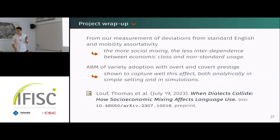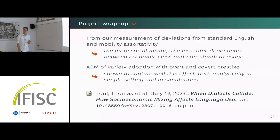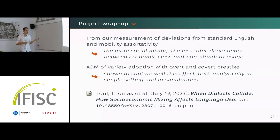To wrap up: we measured how much people deviate from standard language in England and Wales, and relating it to mobility assortativity we found that the more social mixing, the less interdependence between non-standard language use and economic class. We came up with an agent-based model of variety adoption which captured this effect well, both analytically and in more realistic simulations.